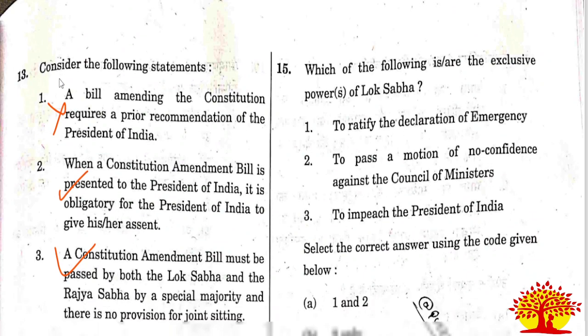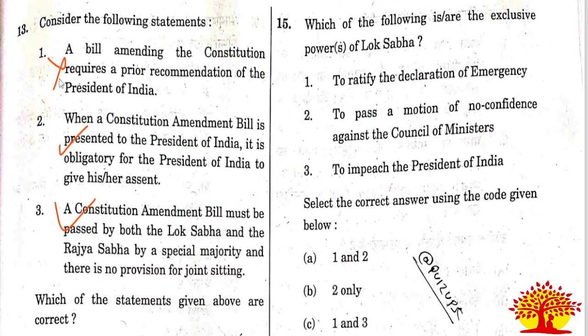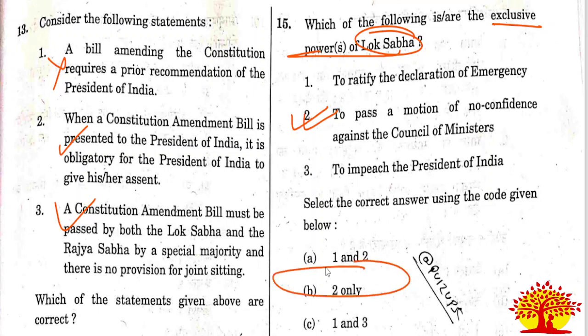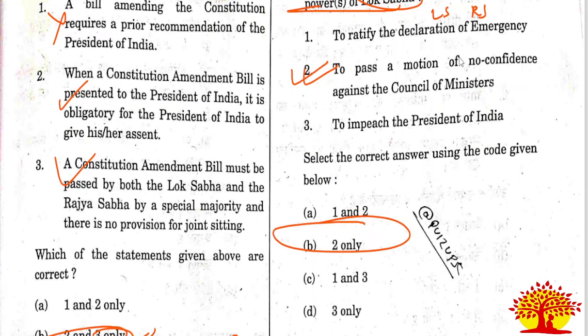Fifteenth question: which one of the following is the exclusive power of Lok Sabha? Only statement 2 is correct. Option B is the right answer. To ratify the declaration of emergency and to impeach the president, both Lok Sabha and Rajya Sabha have the same power. Only statement 2 is the exclusive power of Lok Sabha.